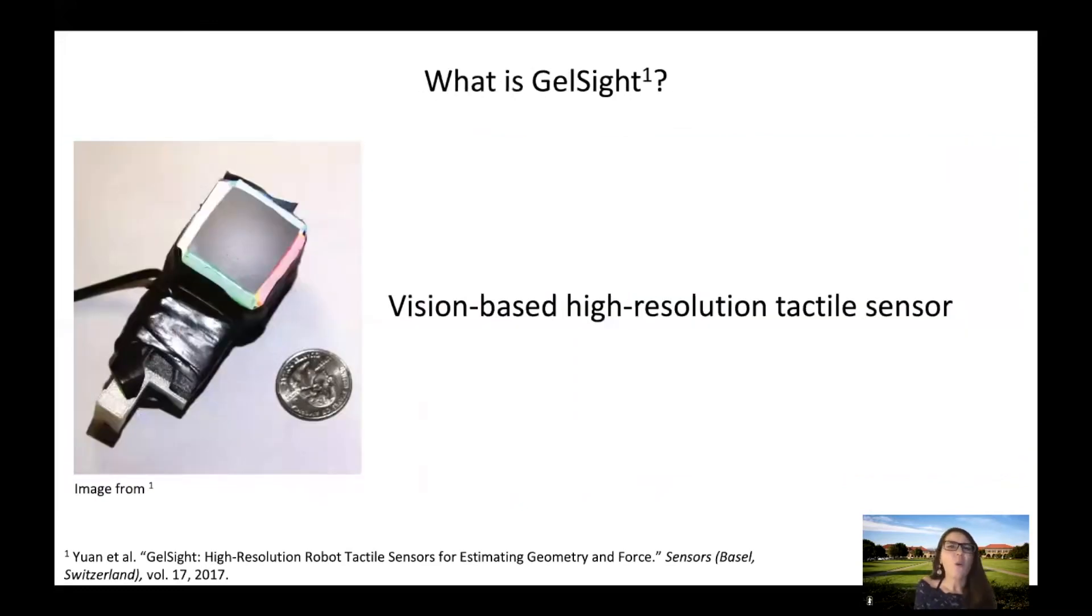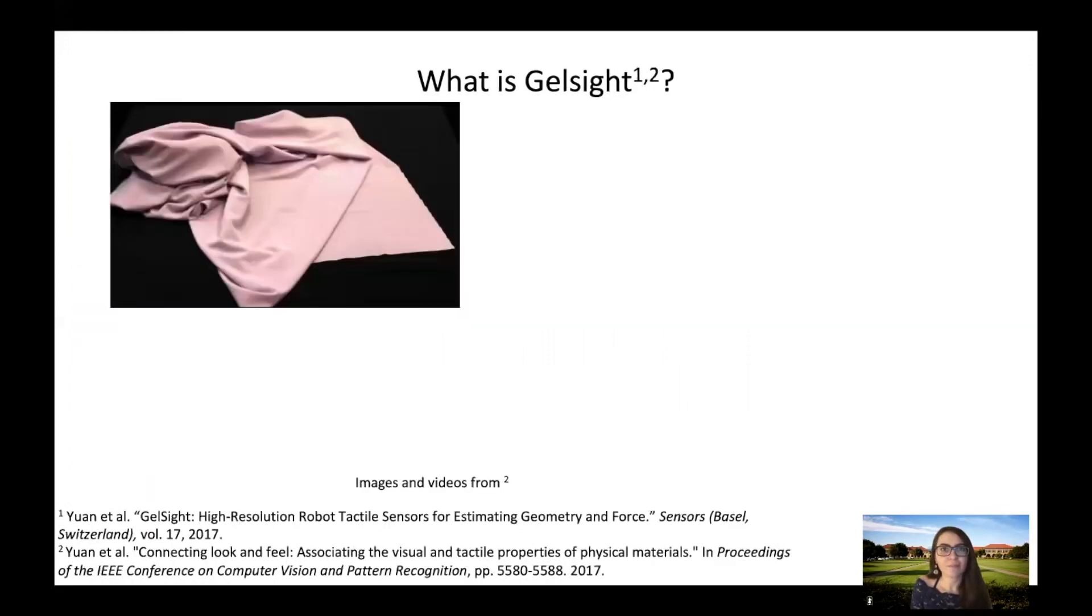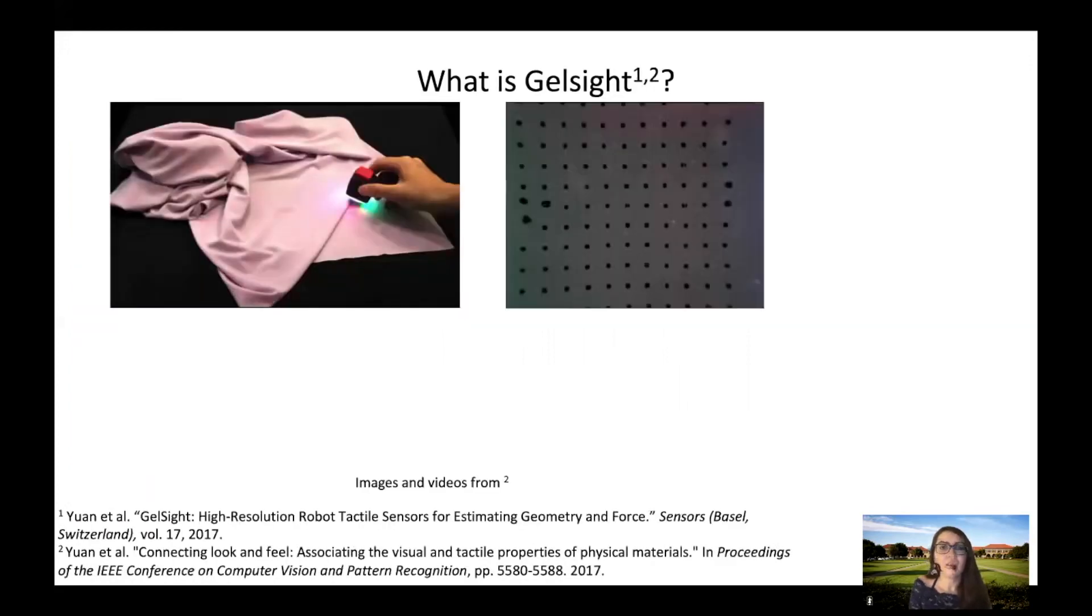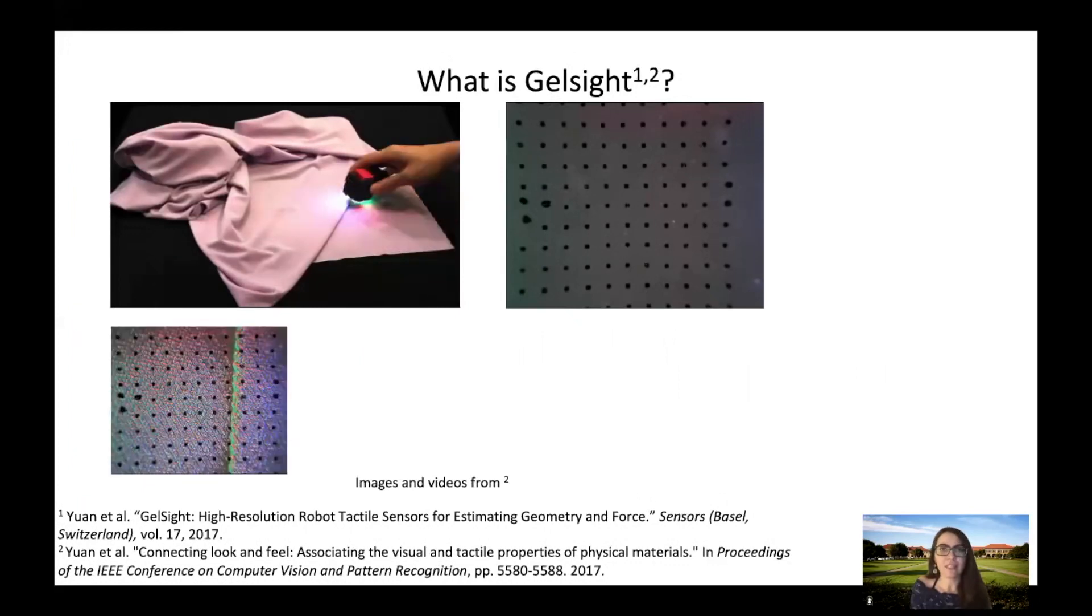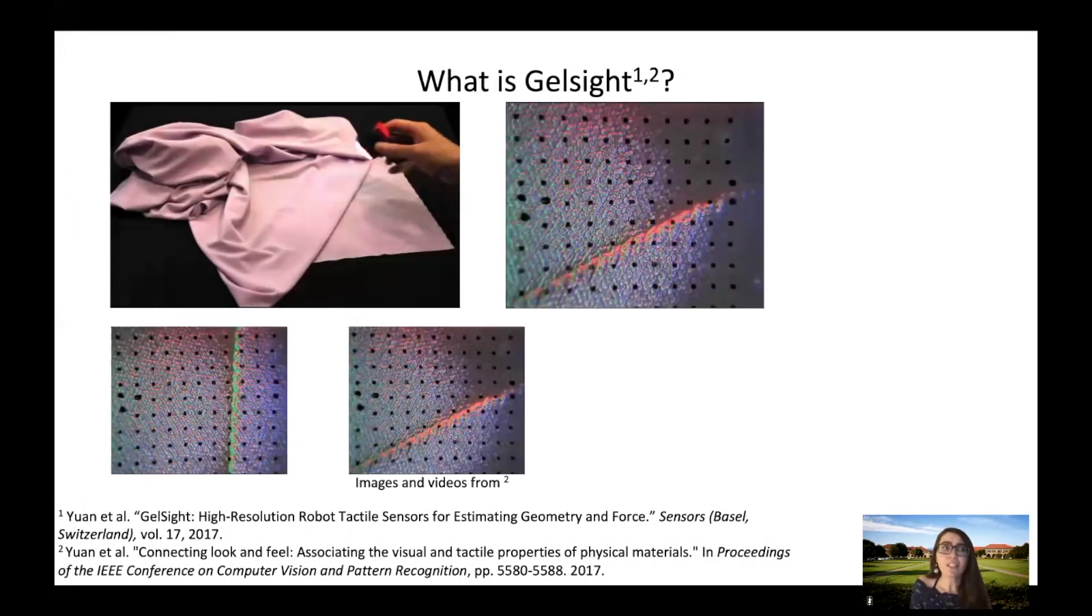You might wonder, what is a gel site? Gel site is a vision-based, high-resolution tactile sensor made of a piece of clear elastomer coated with a reflecting membrane. A video recording camera is attached to the other side of this elastomer and captures its deformation during contact.